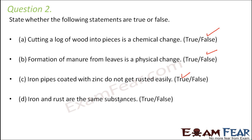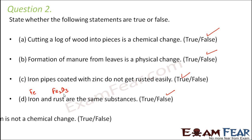Iron and rust are the same substances — this is false. Iron is Fe, whereas rust is the oxide of iron, so they are different substances.